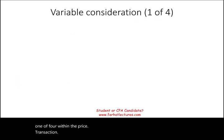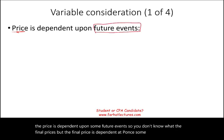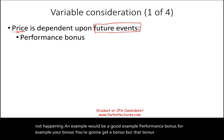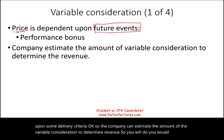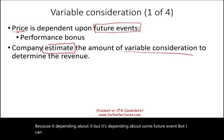Let's start with variable consideration. What is a variable consideration? It means the price is dependent upon some future event — you don't know what the final price is, but it depends on some event happening or not happening. An example would be a performance bonus: you're going to get a bonus, but that bonus is dependent upon some delivery criteria. The company can estimate the amount of the variable consideration to determine the revenue without knowing the exact final price.